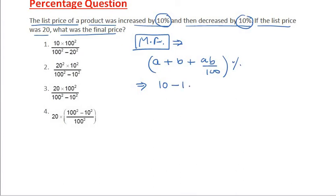We use this formula which says 10, which is a positive or increment, minus 10 because 10% is decreasing, and then as per the formula a times b will become minus 10 times 10, that is 100/100. What we are getting finally is this 10 and minus 10 cancel each other, or this is equivalent to minus 1.